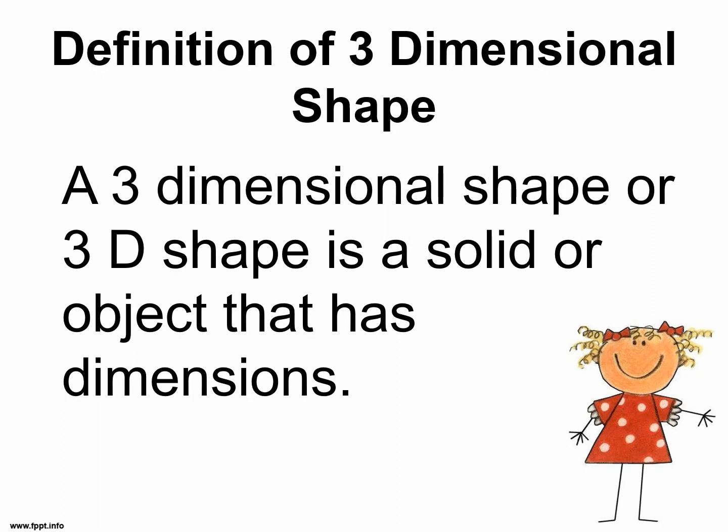Definition of three-dimensional shape. A three-dimensional shape, or 3D shape, is a solid or object that has dimensions.